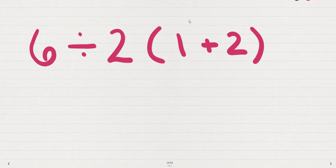This question showed up on Facebook, and I thought I'd take a minute to work this out because it is such a commonly missed order of operations question. We see 6 divided by 2 times the quantity of 1 plus 2.